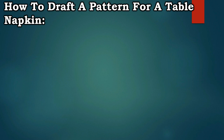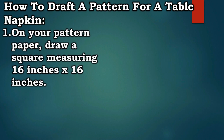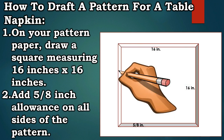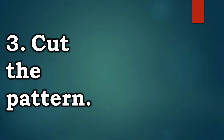How to draft a pattern for a table napkin: Step 1. On your pattern paper, draw a square measuring 16 inches by 16 inches. Step 2. Add 5/8 inch allowance on all sides of the pattern. Step 3. Cut the pattern.